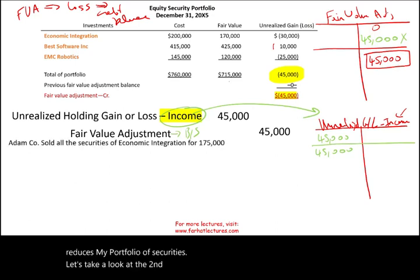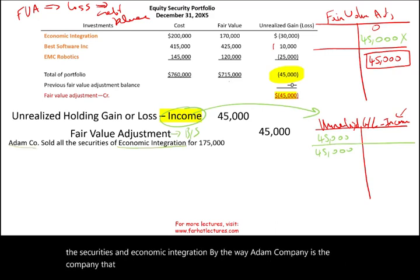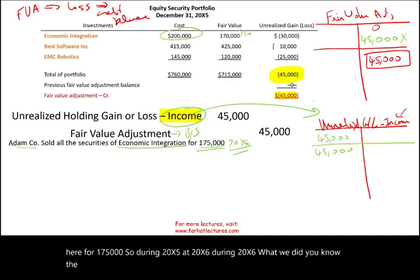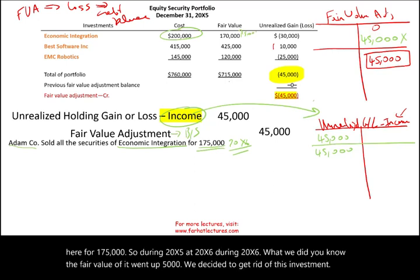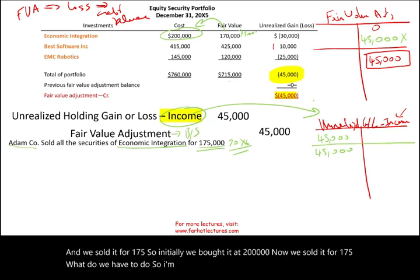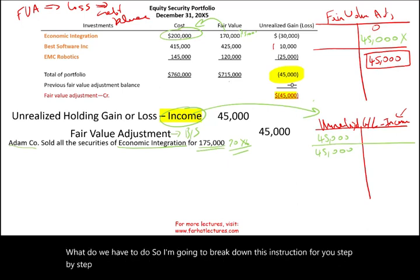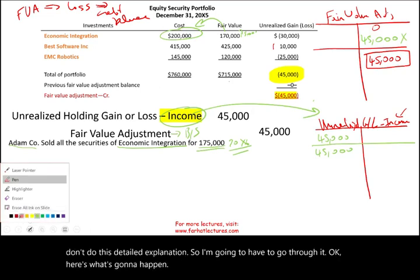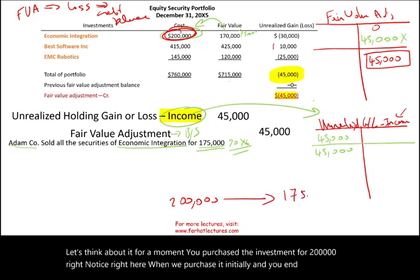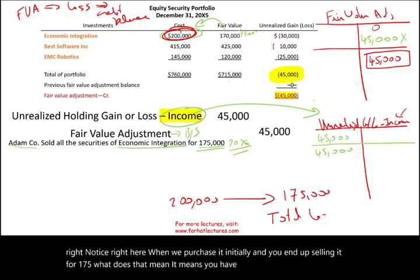Now let's look at the second scenario. Let's assume Adam Company sold all the securities in Economic Integration for $175,000 during 20X6. Initially we bought it for $200,000, so we have a total loss of $25,000. However, during 20X6, the fair value went up $5,000 before the sale. Of the total $25,000 loss, we already recorded $30,000 of losses in 20X5, but the stock recovered $5,000 before we sold it.